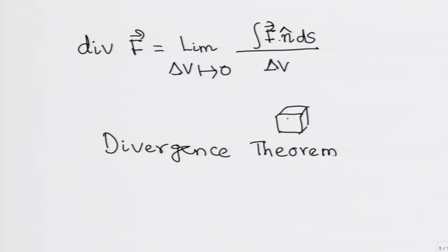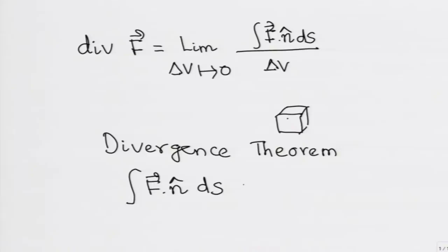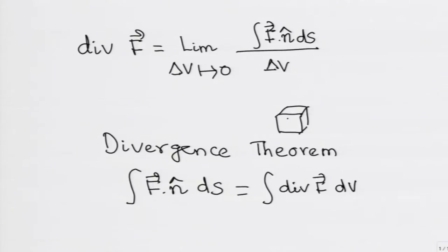The divergence theorem tells me that the normal component, when integrated — that is, the surface integral of the vector field — is given by the volume integral of the divergence of the vector field. Remember that divergence is a scalar. This side is a scalar because of the dot product, and the other side is by definition also scalar.